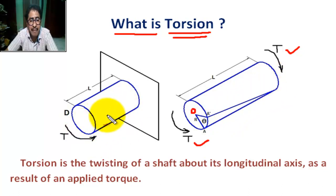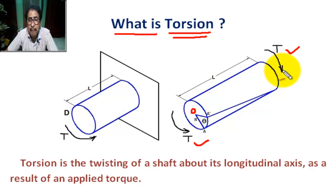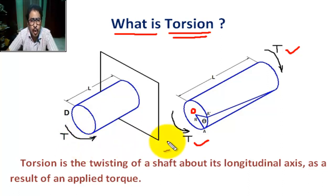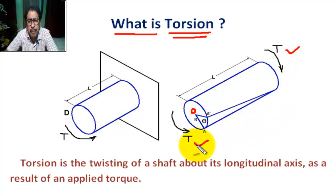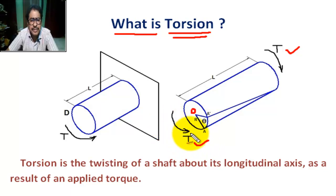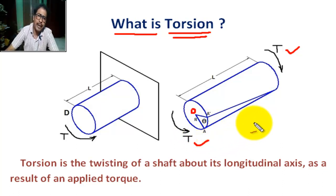Twisting of a shaft as a result of an applied torque — this twisting is nothing but torsion. Torsion can also be called torque.